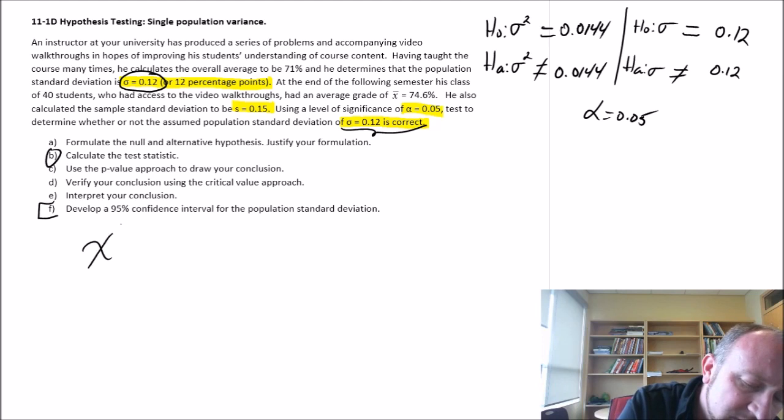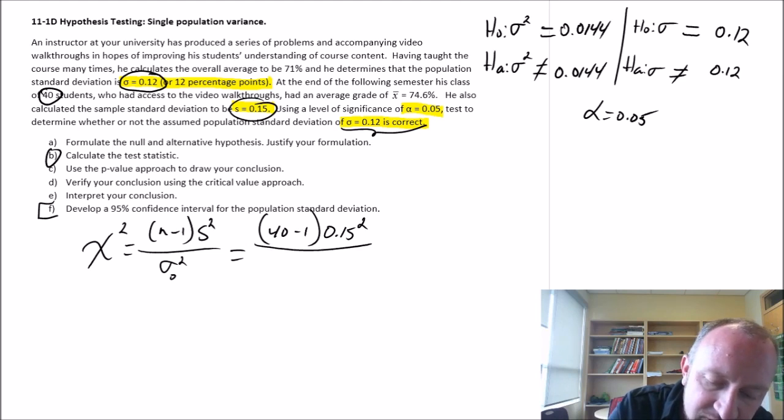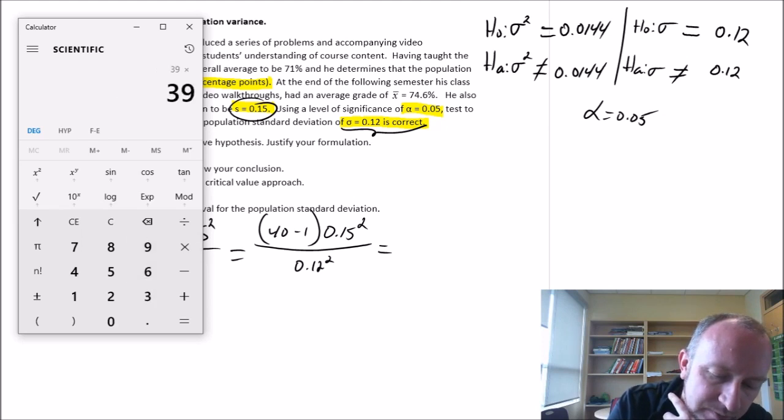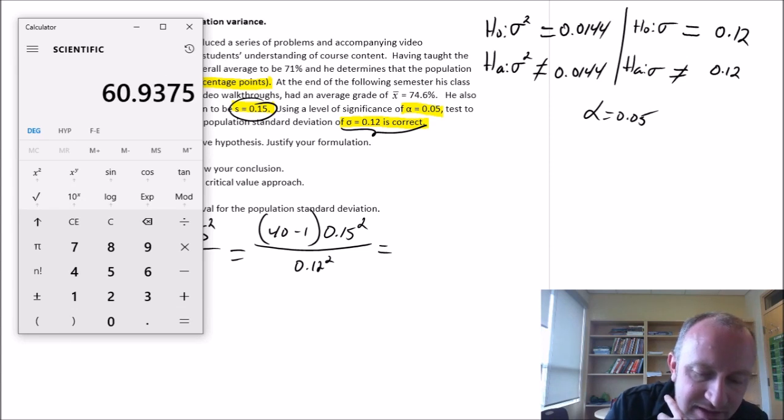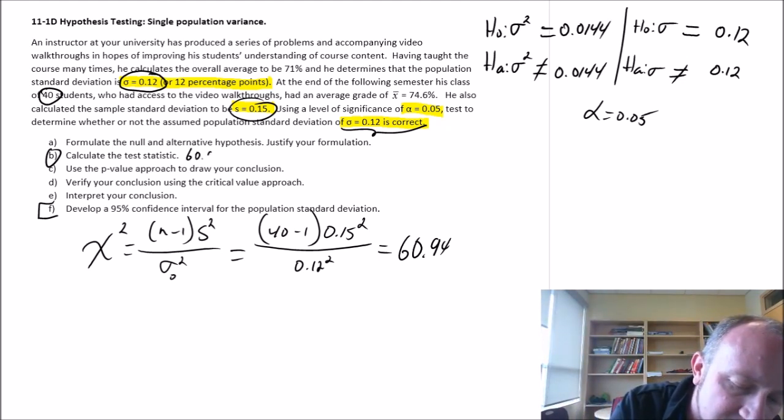Our test statistic. So chi squared equals n minus 1 times s squared over the hypothesized value. This is going to be our sample size was 40 minus 1 times s squared. Our sample standard deviation was here 0.15 squared divided by 0.12 squared. And this will give us a value. So 39 times 0.15 squared divided by 0.12 squared equals 60.94. Okay there's our test statistic.